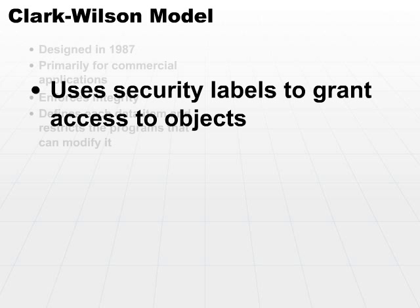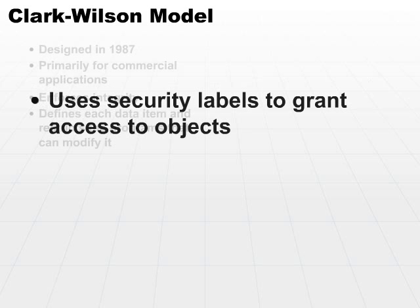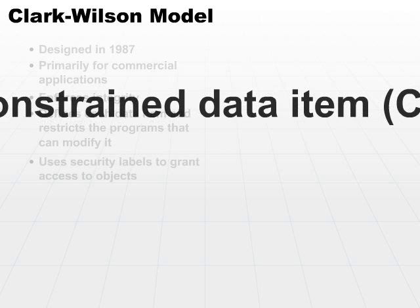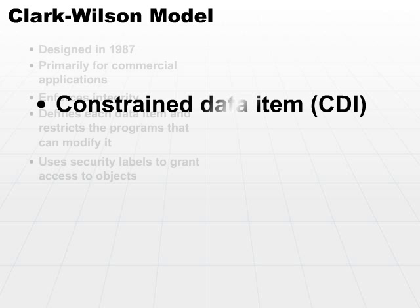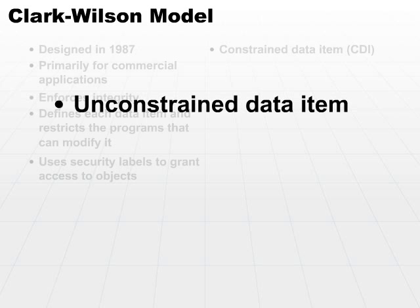Let's take a look at a few definitions or terms that help us understand the Clark-Wilson model. First off, there is a constrained data item, or CDI. That is the data item that is protected by the model. Not every data item is protected by the Clark-Wilson model. There are data items which live outside and are not protected, and those are called unconstrained data items.